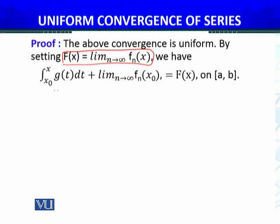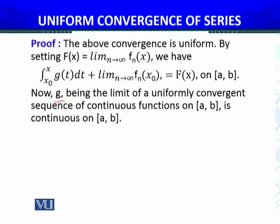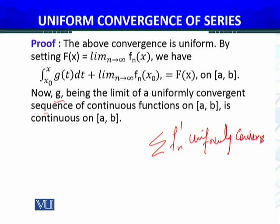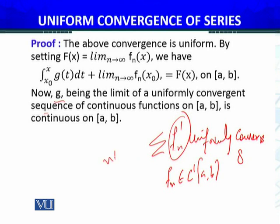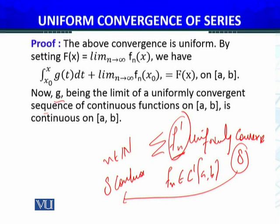If I set lim(n→∞) fₙ(x) = f(x), then the equation becomes f(x) = ∫(x₀ to x) g(t) dt + lim(n→∞) fₙ(x₀). Now g is the limit of a uniformly convergent sequence. Since fₙ belongs to C¹[a,b], each fₙ' is continuous. They uniformly converge to g, so we can apply the result proved in Analysis 2: g is also continuous on [a,b]. So g, being the limit of a uniformly convergent sequence of continuous functions on [a,b], is continuous.